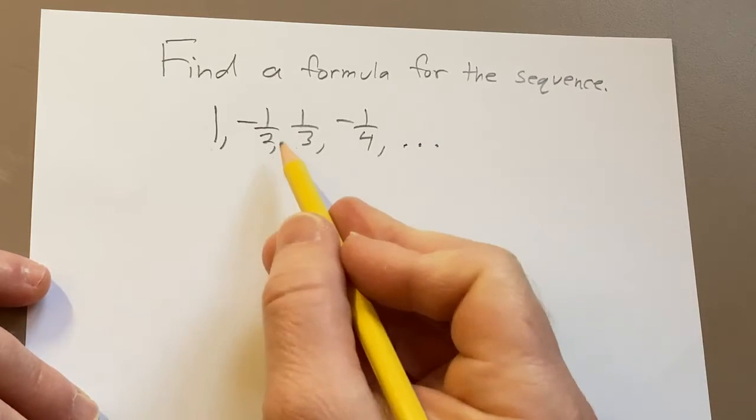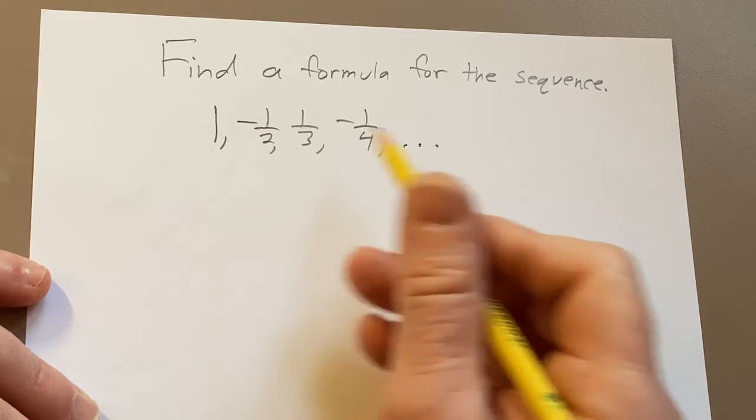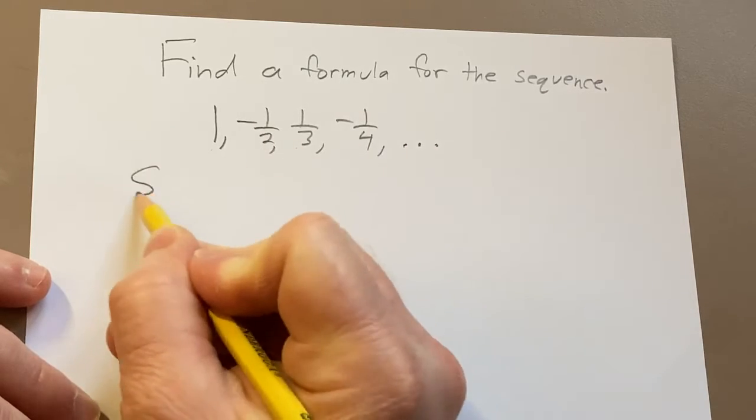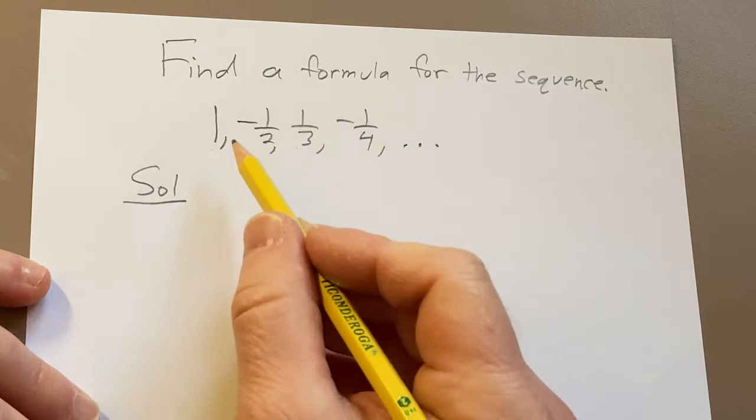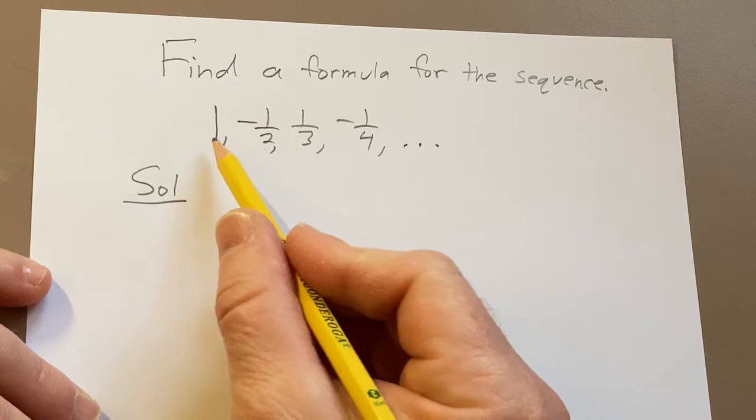So let's go ahead and try to go through the thought process of coming up with a formula for this particular sequence. Solution. There's probably different ways to think about it. The first thing I'm noticing is that we have signs that are alternating.